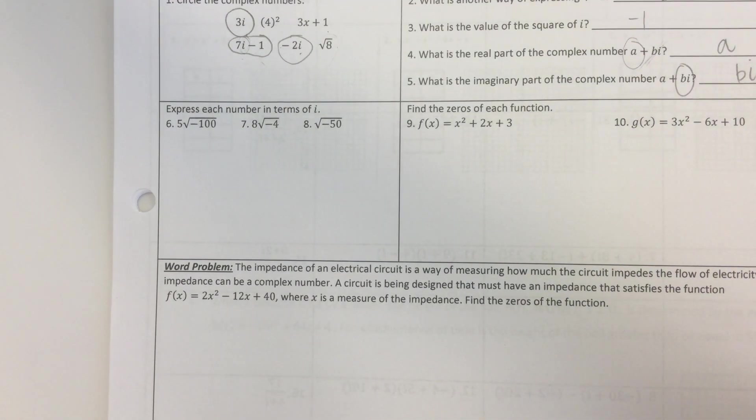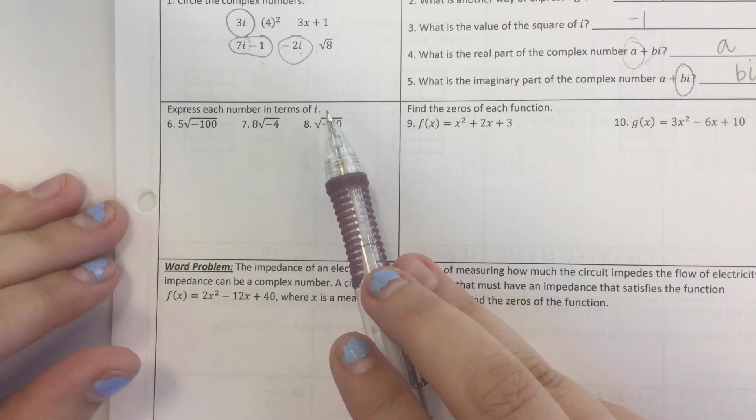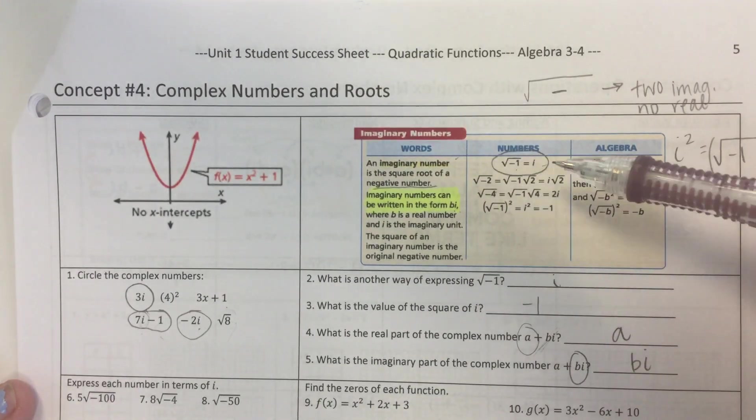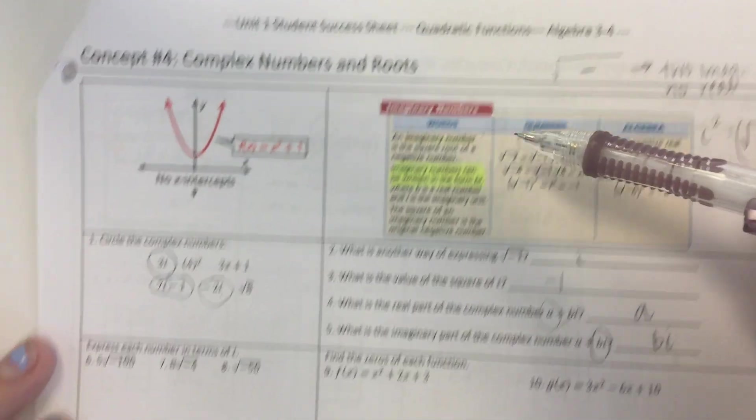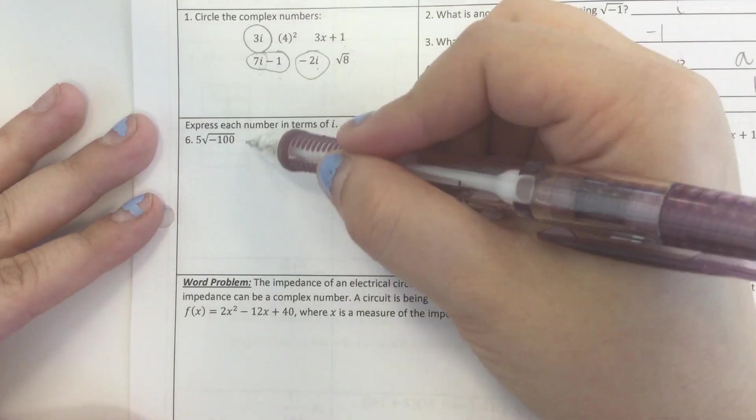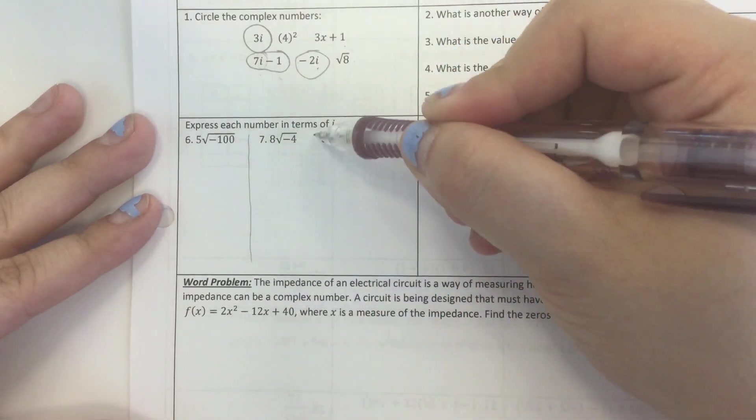Okay, express each number in terms of i. We want to take out the square root of negative 1 any way we can and make it i instead. So here's how we're going to do this. I want to split this up this way so we have room.